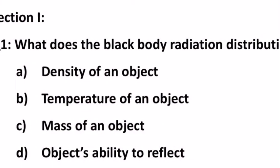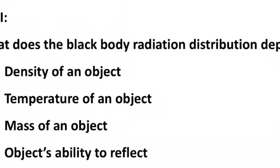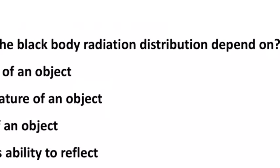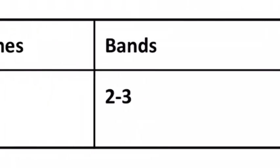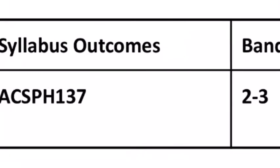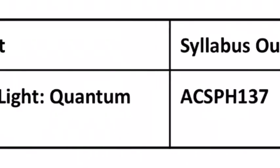Now let's look at a set of questions to summarize what we learned. Question 1: What does the blackbody radiation distribution depend on? Option B is correct. This is because the other options refer to the type of material, and we know from Wien's law and the displacement of the graph that the distribution of blackbody radiation is only dependent on temperature.